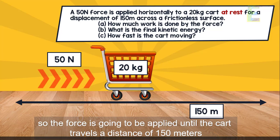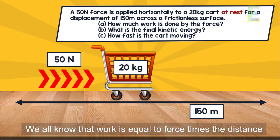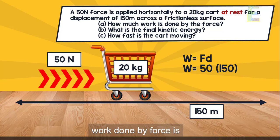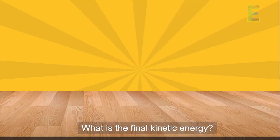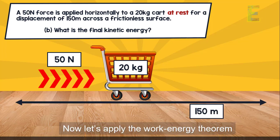First, we need to calculate how much work is done by the force as the cart travels 150 meters. We know that work equals force times distance. Applying this formula, the work done by the force is 7,500 joules.